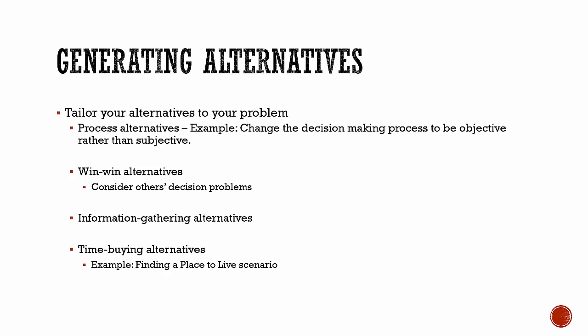Another way is to look at win-win alternatives. Sometimes you have a problem or decision to make, but it's really not your decision in the end — maybe it's a supervisor's decision or your spouse's decision. In this case, it's good to come up with win-win alternatives so you can get them something they want in solving the problem along with something that you want.